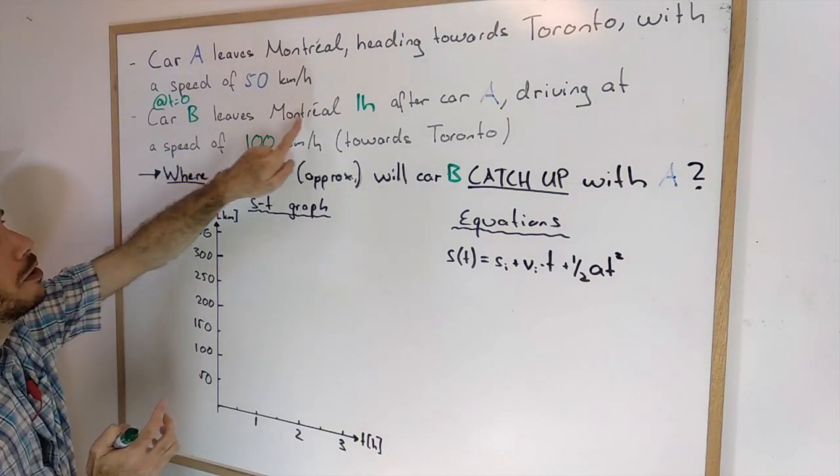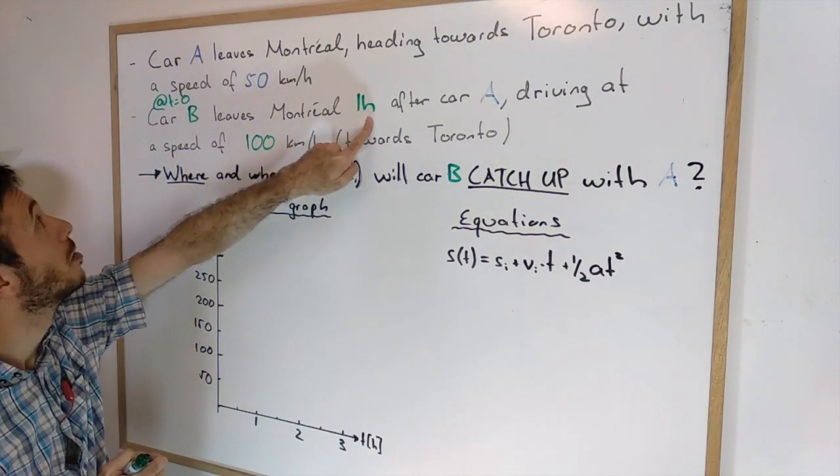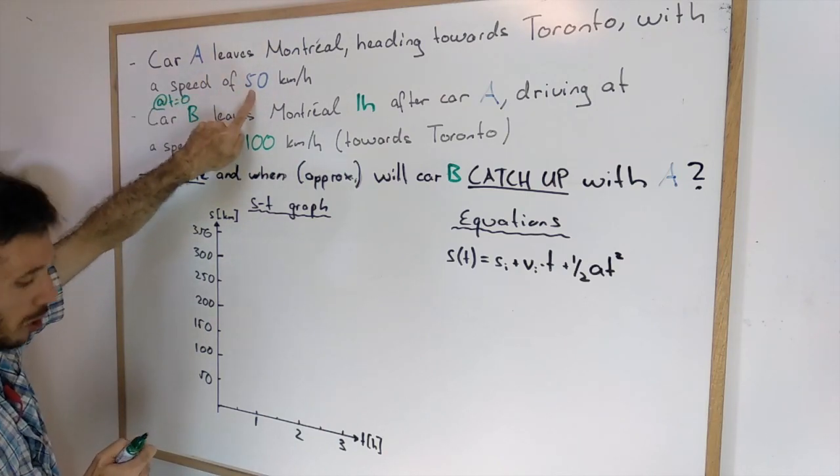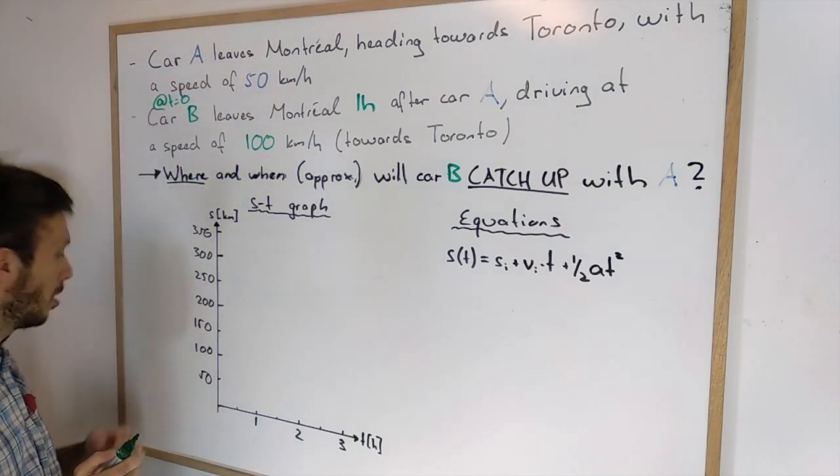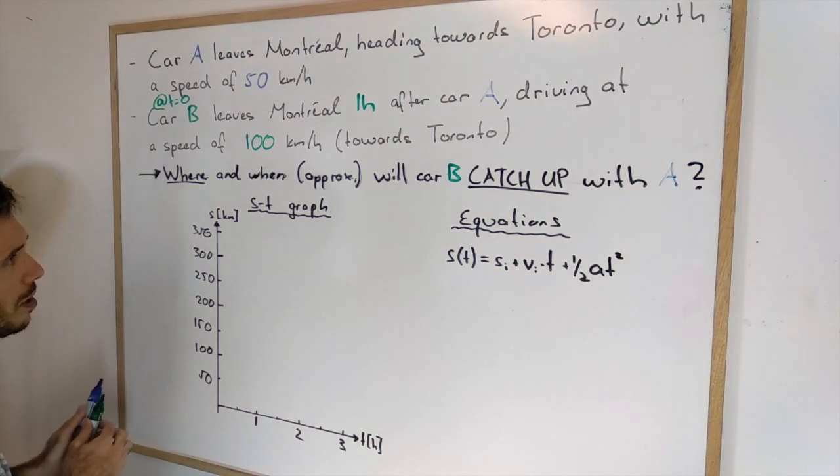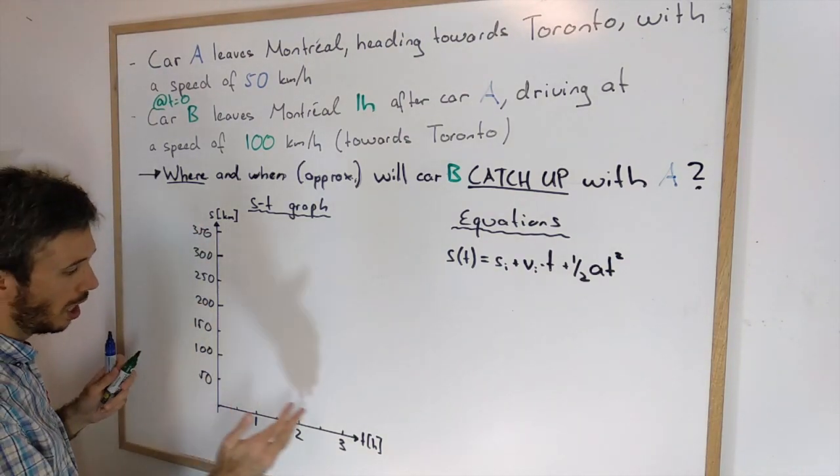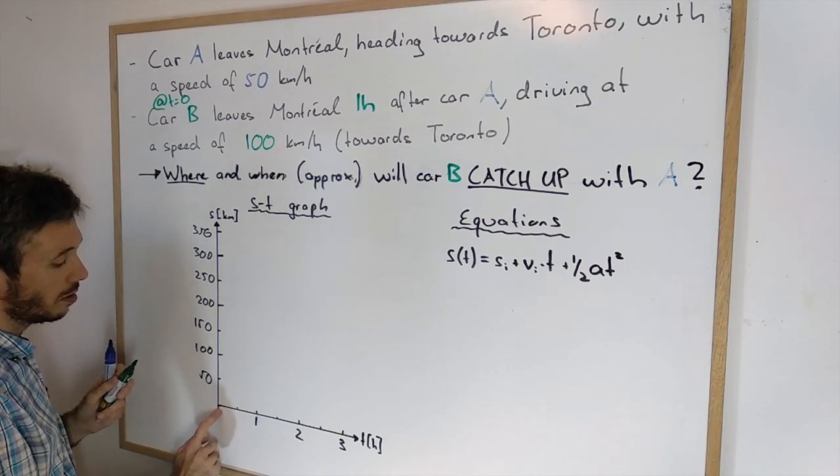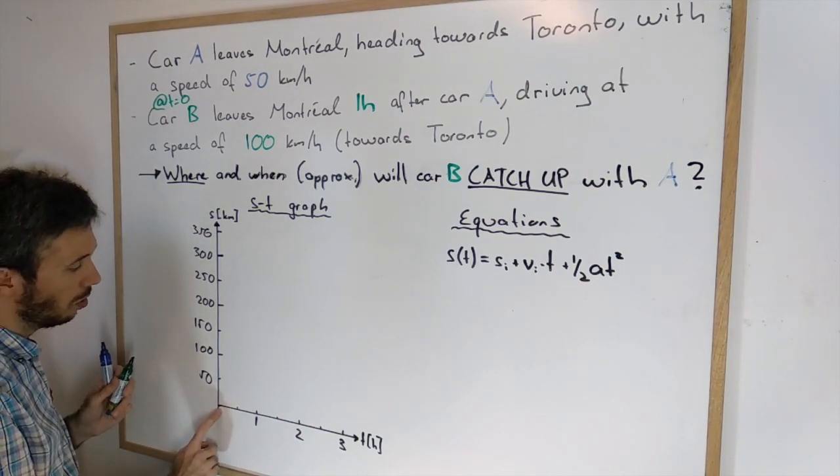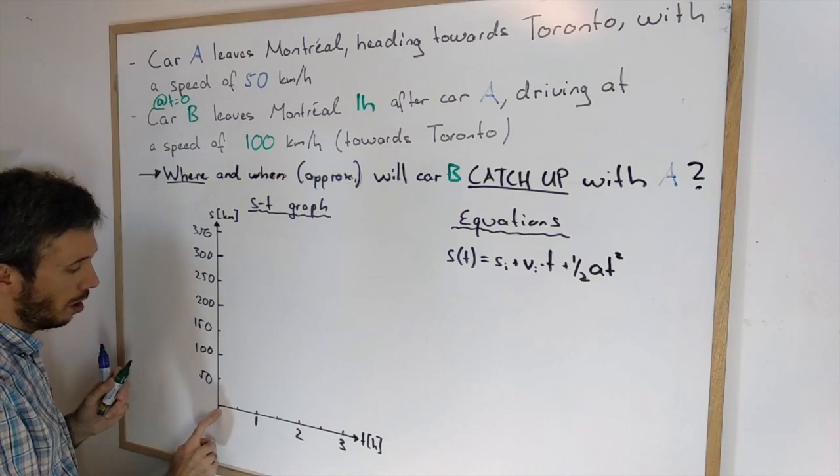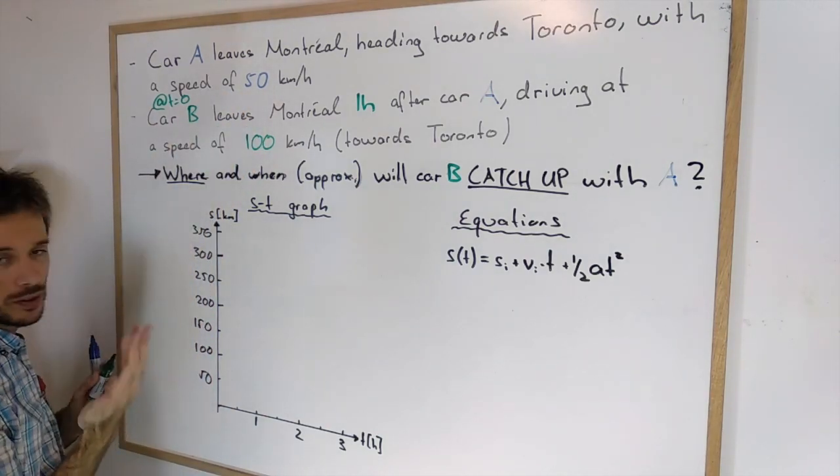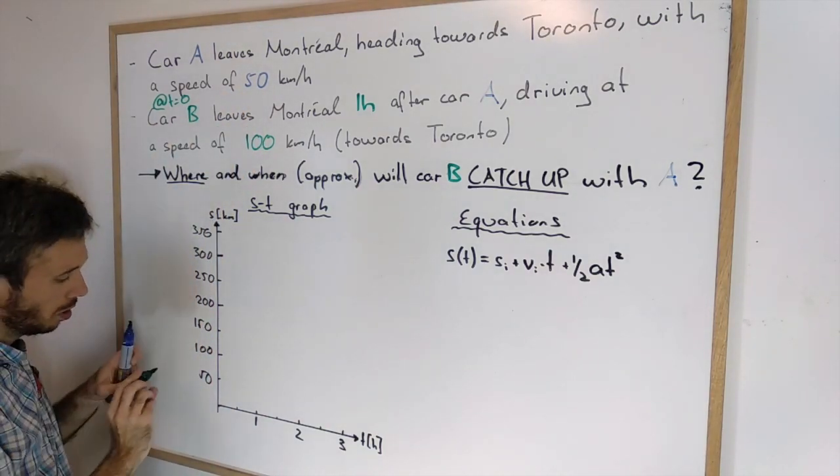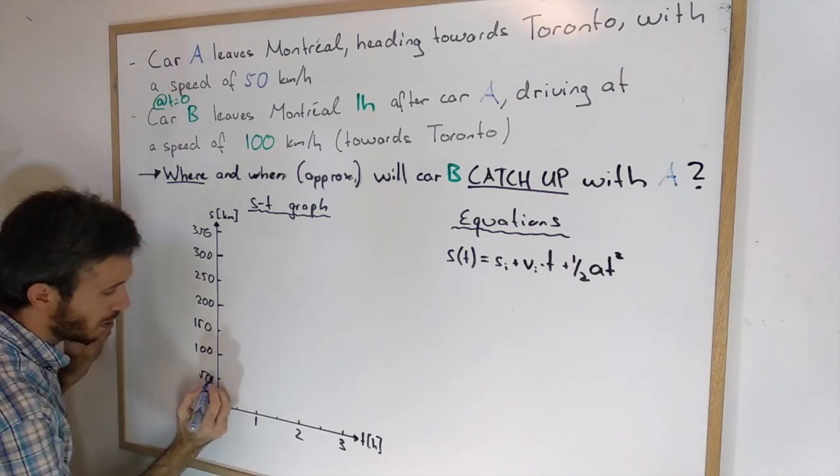So B was leaving Montreal one hour after A. That means A was already driving 50 km an hour for one hour. That means in our position time graph, when B is starting at zero, our car A already traveled 50 km an hour times one hour. That means our car A was already here.